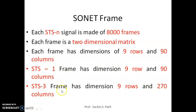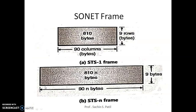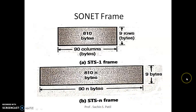In the STS-3 frame, 90 multiplied by 3 bytes gives 270 columns. So 9 × 270 columns × 8 × 8000 frames per second — that is the frame rate for STS-3.